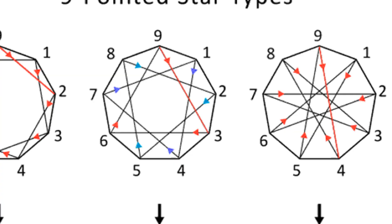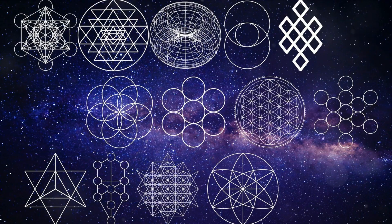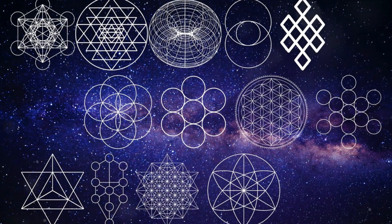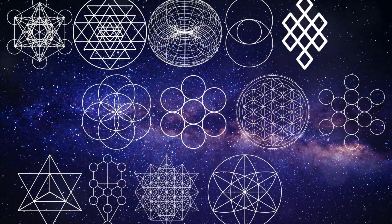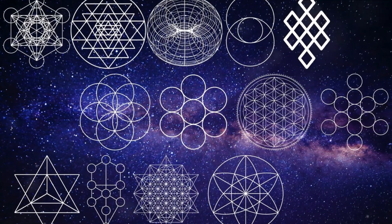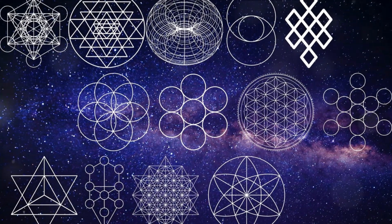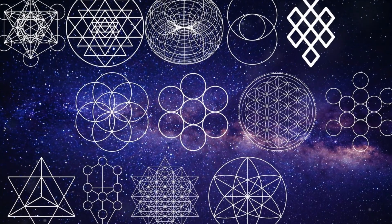What is sacred geometry? Sacred geometry is a term used to describe certain geometric patterns, shapes, and ratios that hold symbolic and spiritual significance across various cultures and belief systems throughout history.